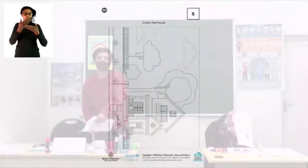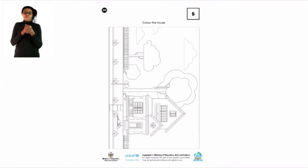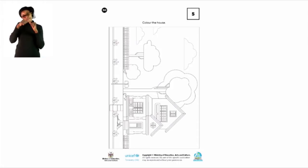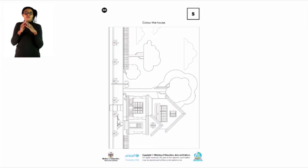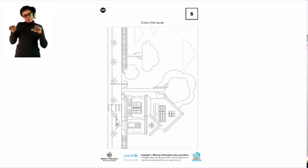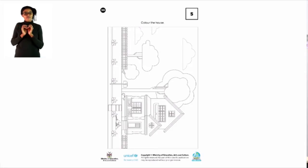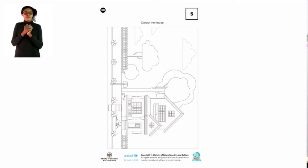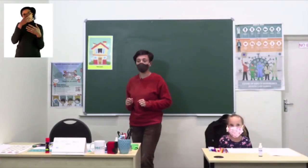Color the house. Remember, our theme is houses. On page 30, you have to color the whole picture very nicely — in color, in one direction, and neatly. That is what you have to do on page 30. We have come to the end of our lesson.